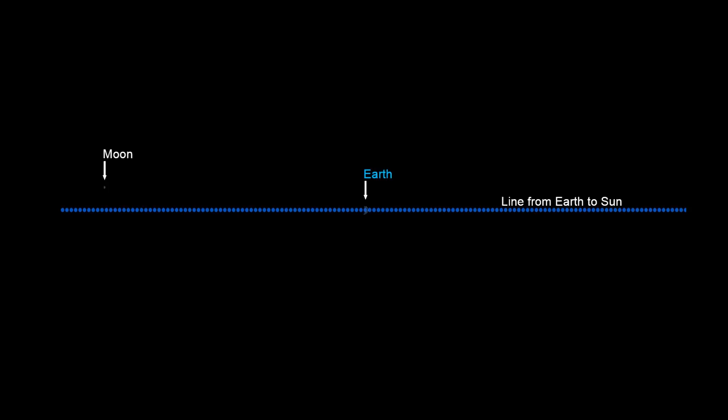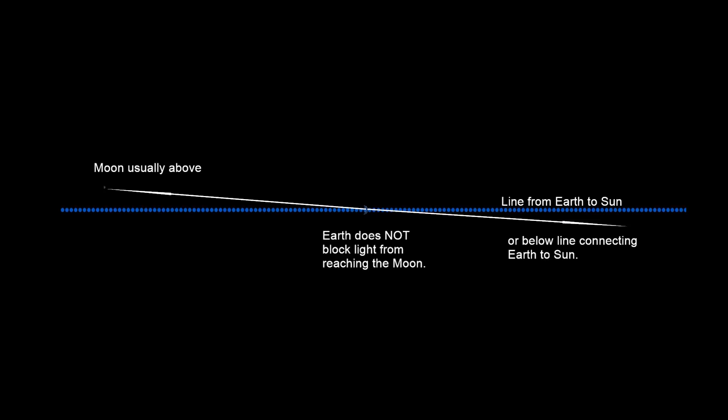Drawn in blue is an imaginary line connecting the earth and sun, which is far to the right and not visible on the screen at this scale. The moon is almost always a bit above or below this imaginary line connecting the earth and sun, so the earth does not block the sun's light from reaching the moon.